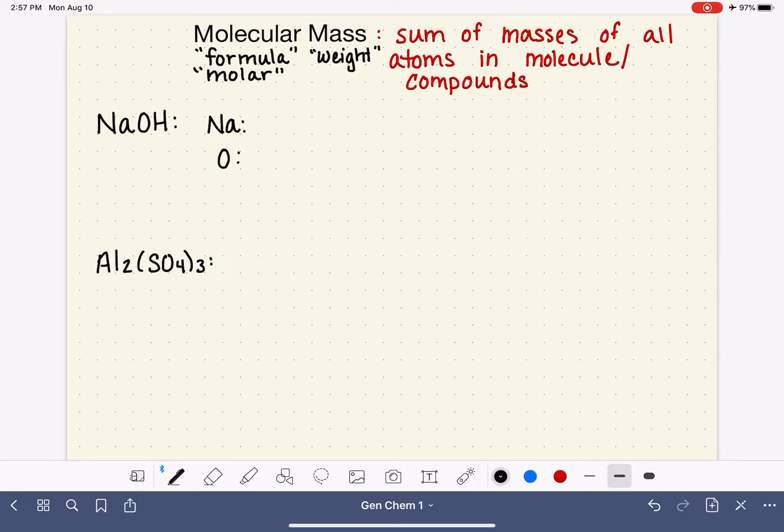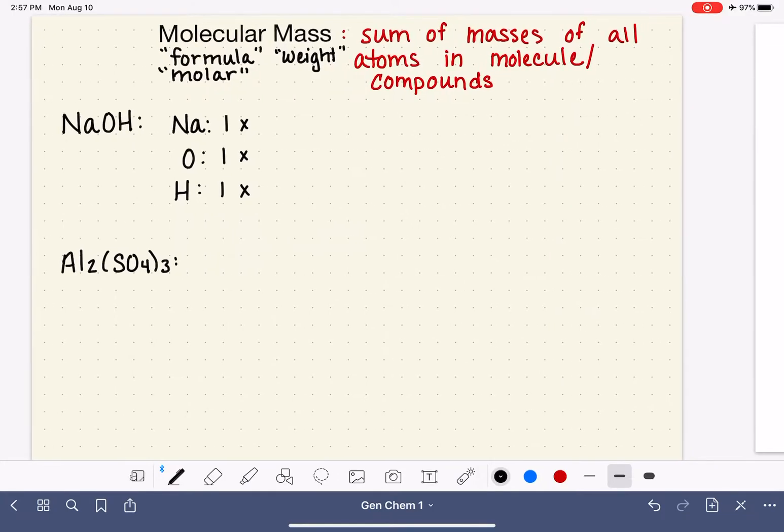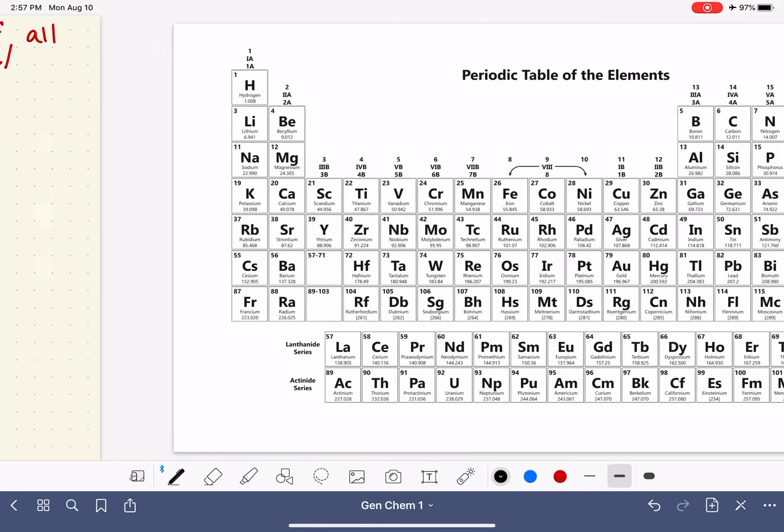Sodium hydroxide has three different types of atoms - sodium, oxygen, and hydrogen. Identifying the amount of each atom: we have one sodium, one oxygen, and one hydrogen. So I'm going to write that over here. We have one of each. And multiplying that quantity by each atom's mass, which we get from the periodic table. So I'm going to slide over to the periodic table and we're going to look for these atoms.